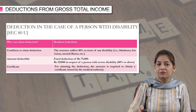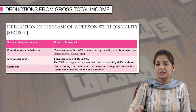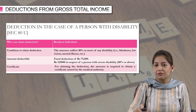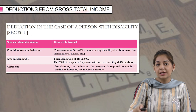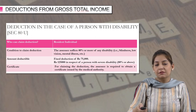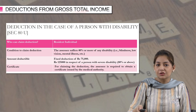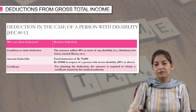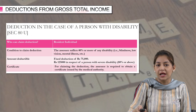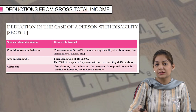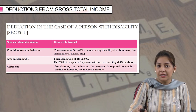Lastly, we have the section which deals with deduction in the case of a person with disability, that is section 80U. If the assessee himself is a resident individual and he is suffering from any disability which is more than 40 percent — it may be blindness, low vision, mental illness — he can claim the deduction under section 80U. There is a fixed deduction amount of rupees 75,000. However, if the disability is severe, that is more than 80 percent, there is an enhanced amount of rupees 1,25,000. The condition is that he is required to obtain a certificate issued by the medical authority.